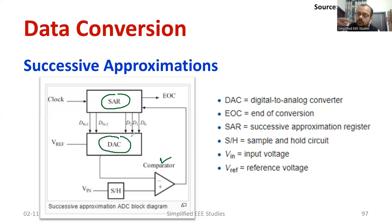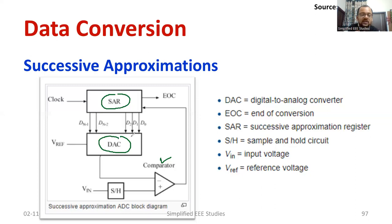Also, to complete the process in a cyclic fashion, we require a digital to analog converter, DAC. It helps to make the process cyclic. So the successive approximation technique includes the following components: sample and hold circuit, comparator, successive approximation register, and digital to analog converter.